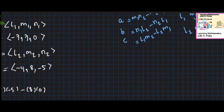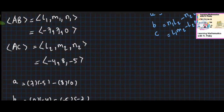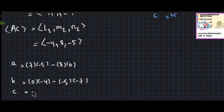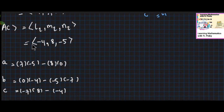C is L1·M2 minus L2·M1. L1 is minus 7, M2 is 8; minus L2 which is minus 4, times M1. The cross product gives us the normal vector components A, B, C for the plane equation. L2 is minus 4 and one is seven.